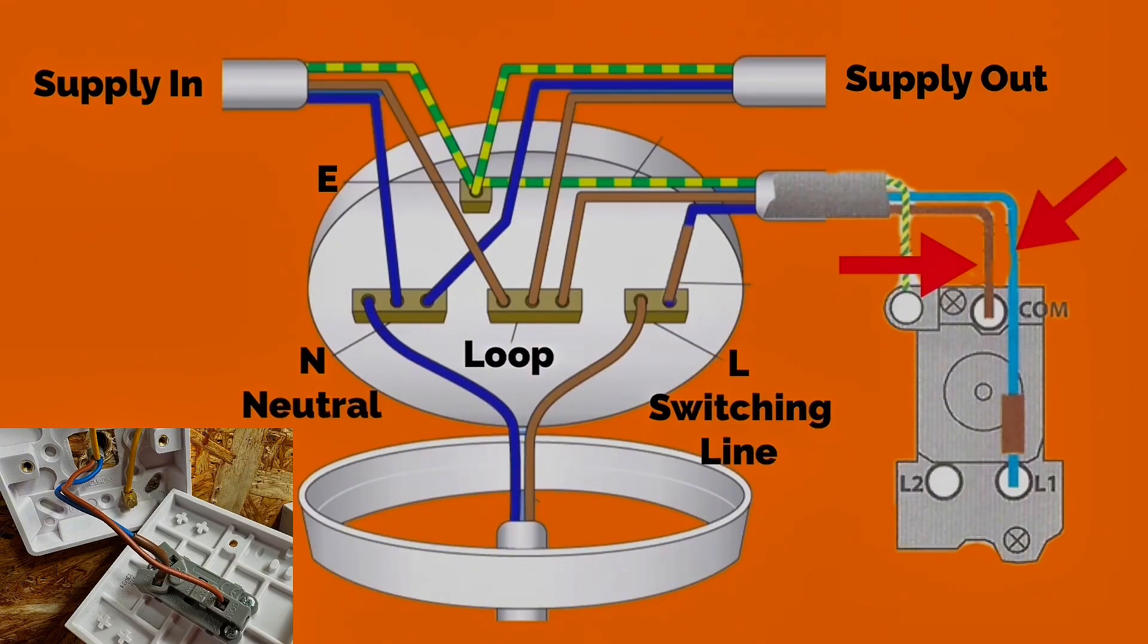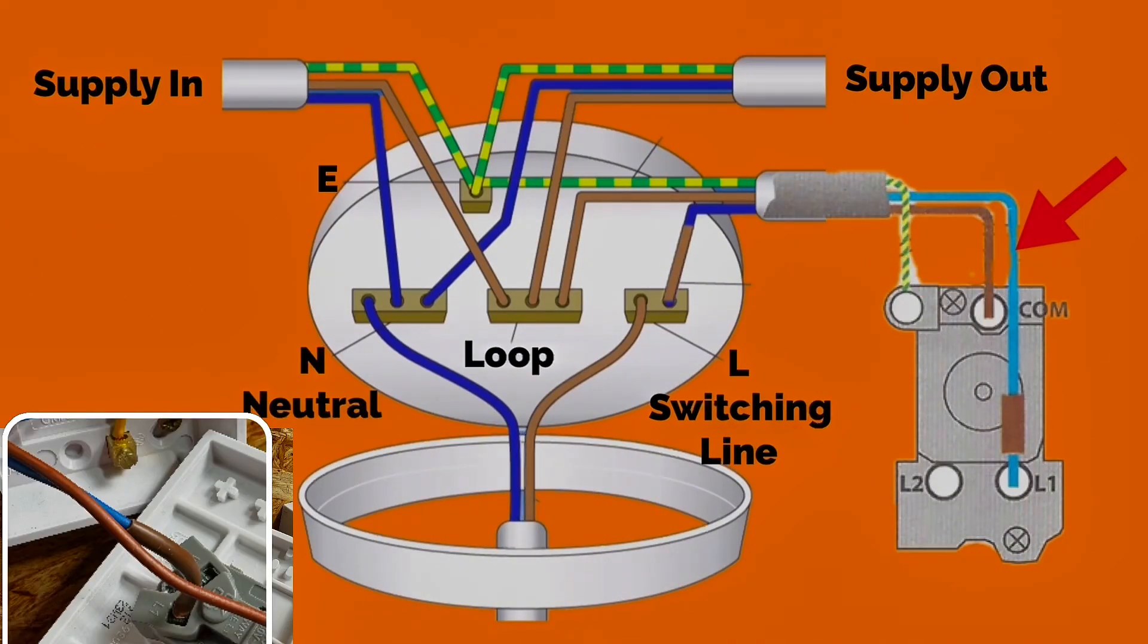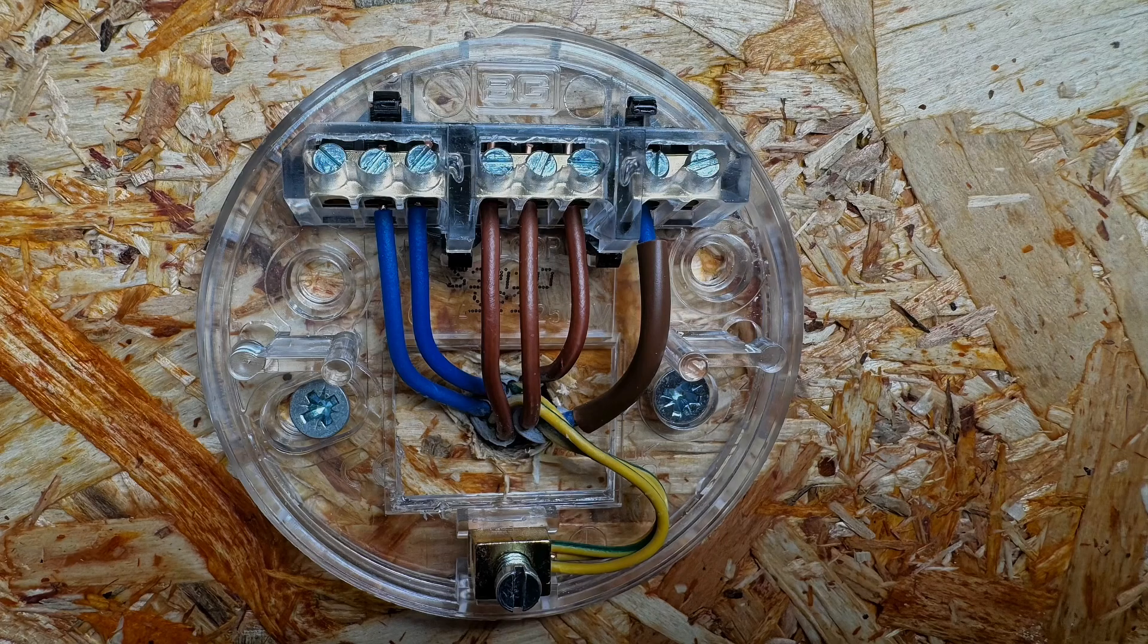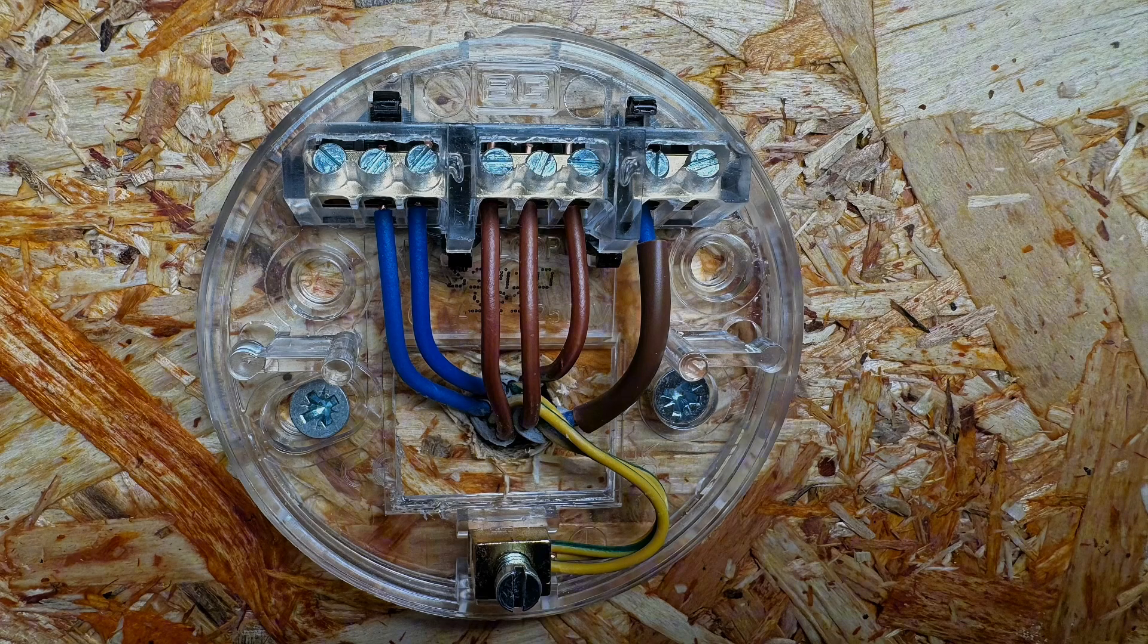In this case, they've used twin and CPC cable, and the conductor is blue but identified at both ends with brown sleeving because it isn't a neutral—it's a returning switching line conductor. It's terminated at the L terminal, which is for the switching line so you have control over the lamp. The CPC once again is terminated in the earth terminal within the ceiling rose itself.